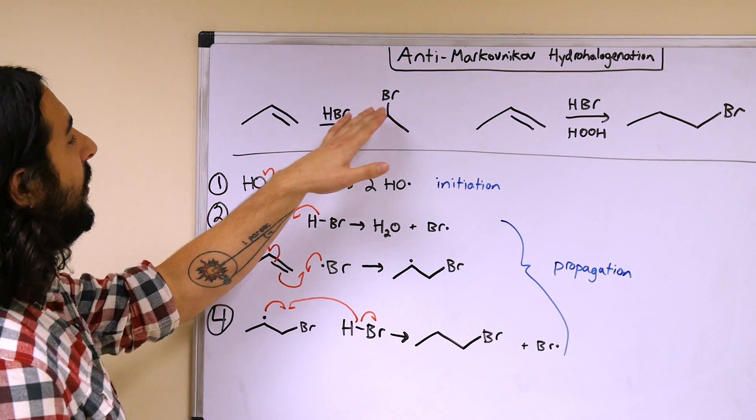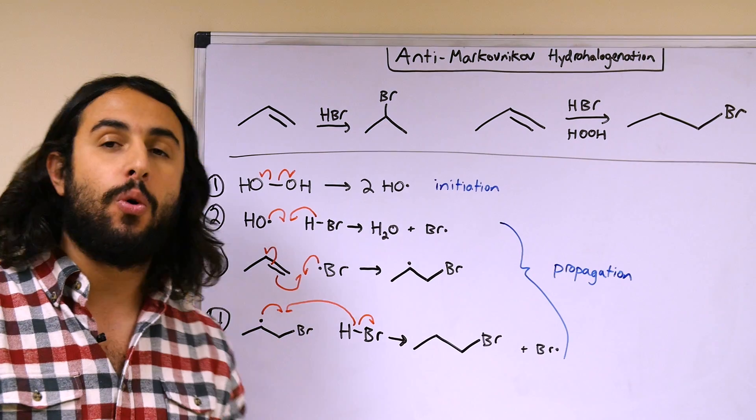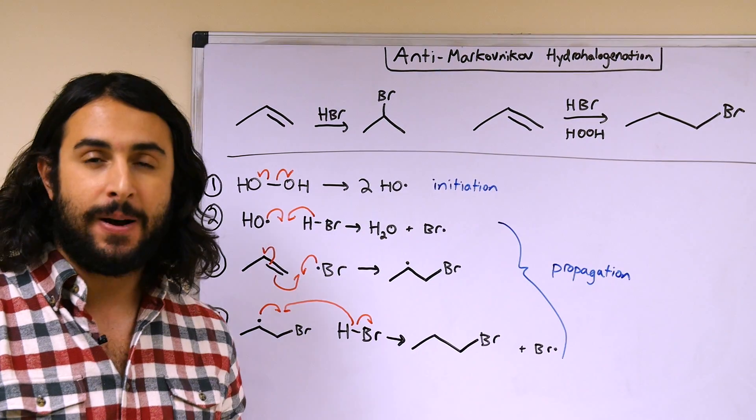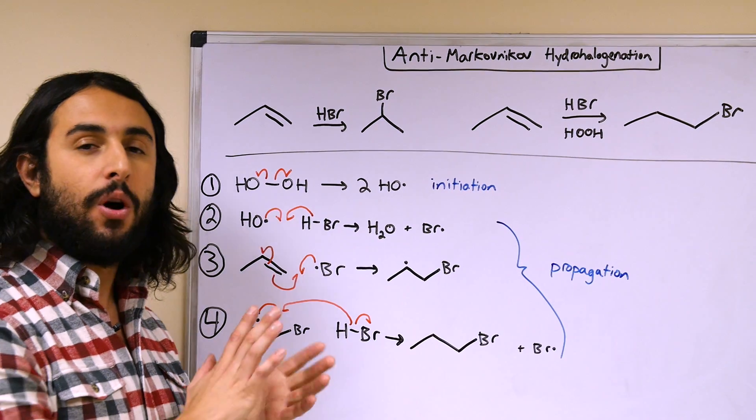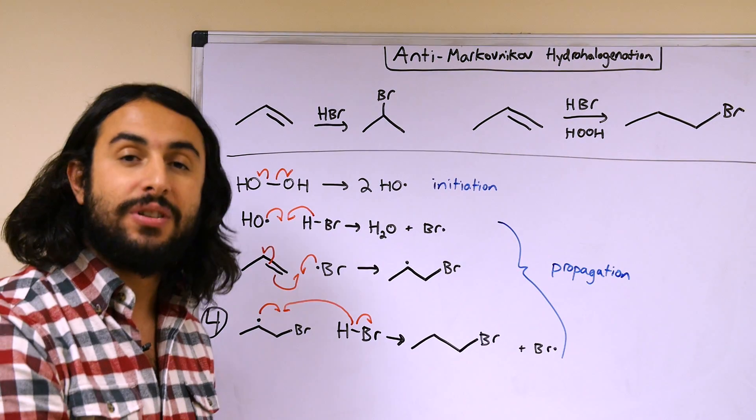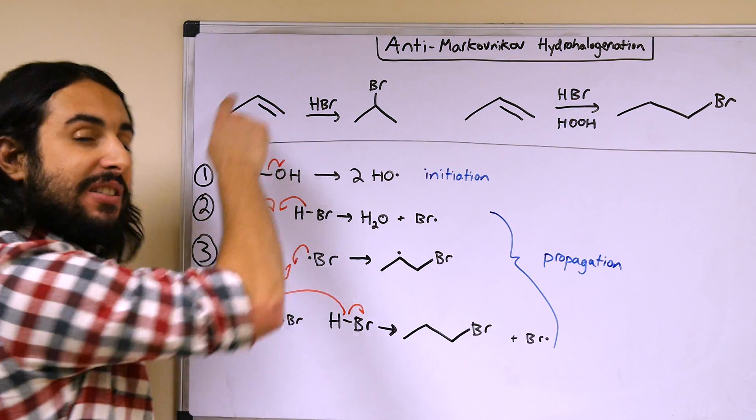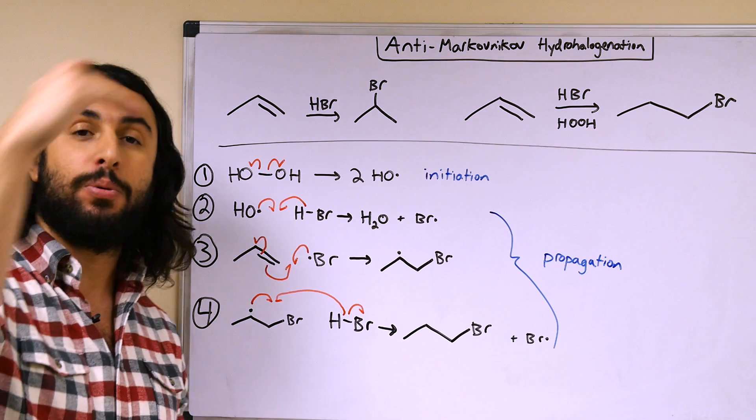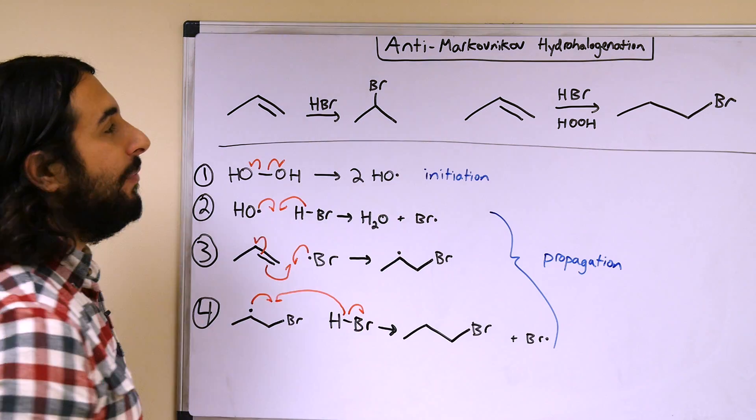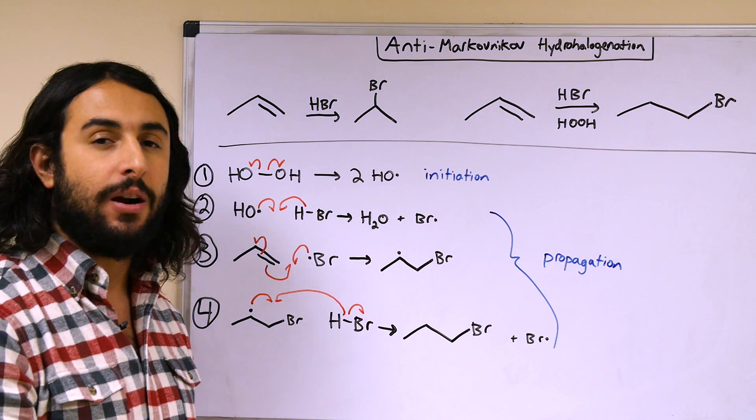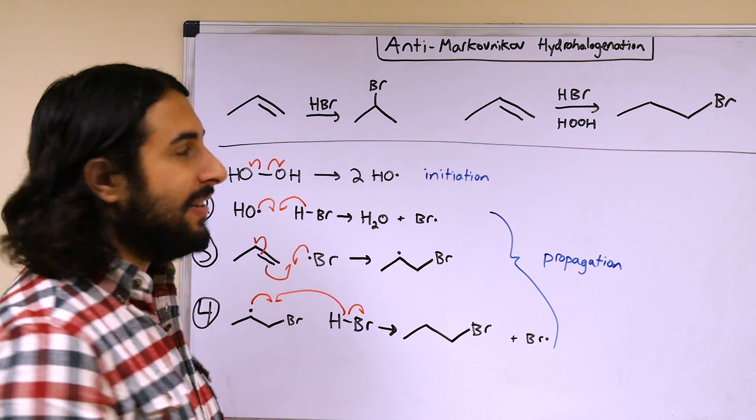Regiospecific meaning that the halogen would always go to the more substituted of the two carbons participating in the pi bond because it would only go by the more stable carbocation intermediate. Remember this pi bond would get the proton, leave the secondary carbocation, then that's where the bromide would go and we'd get the Markovnikov product in a regiospecific manner.